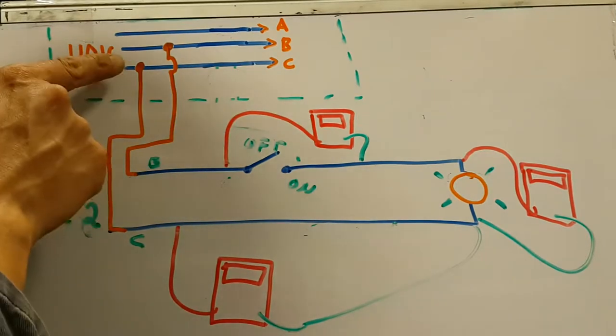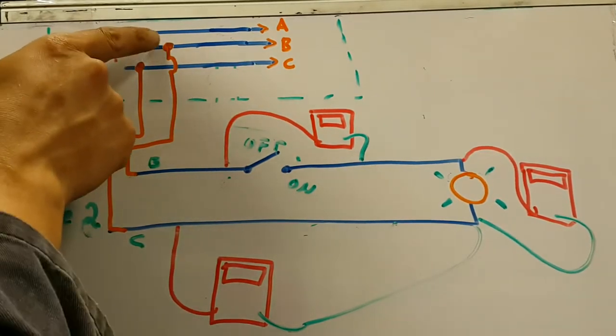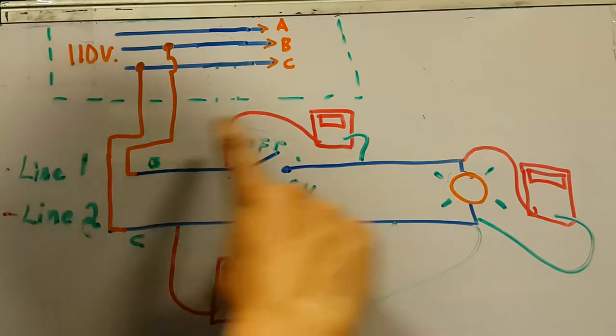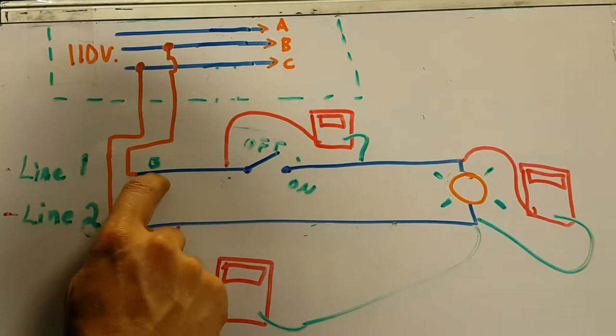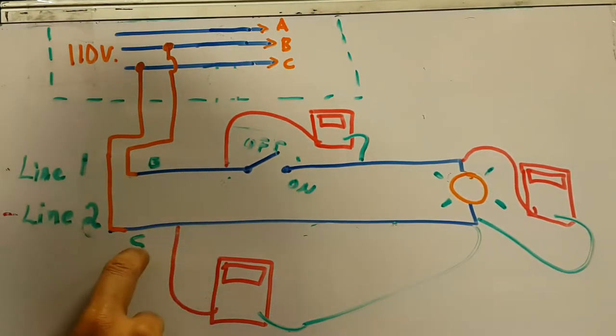We are stealing power from the Charlie phase and the Bravo phase. Now, the circuit over here, the one that I'm using, I'm going to say that line one has B power, and line two has C power. That will be important later on.